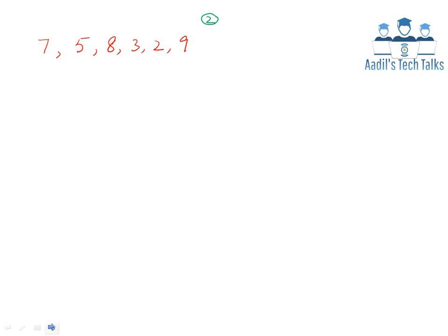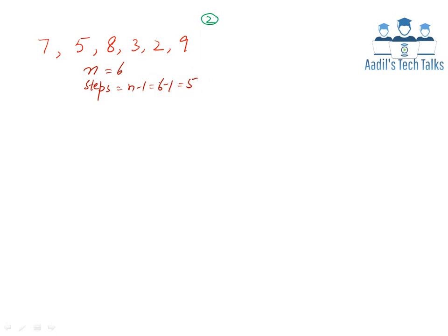Suppose we have a list of elements: 7, 5, 8, 3, 2, 9, and we are required to sort it using insertion sort. Here n is equal to 6, so total steps will be n minus 1, which is 6 minus 1, equal to 5. Now as the first element, which is 7, is already considered sorted, we will start step number 1, and our element will be 5, because 7 is considered already sorted.